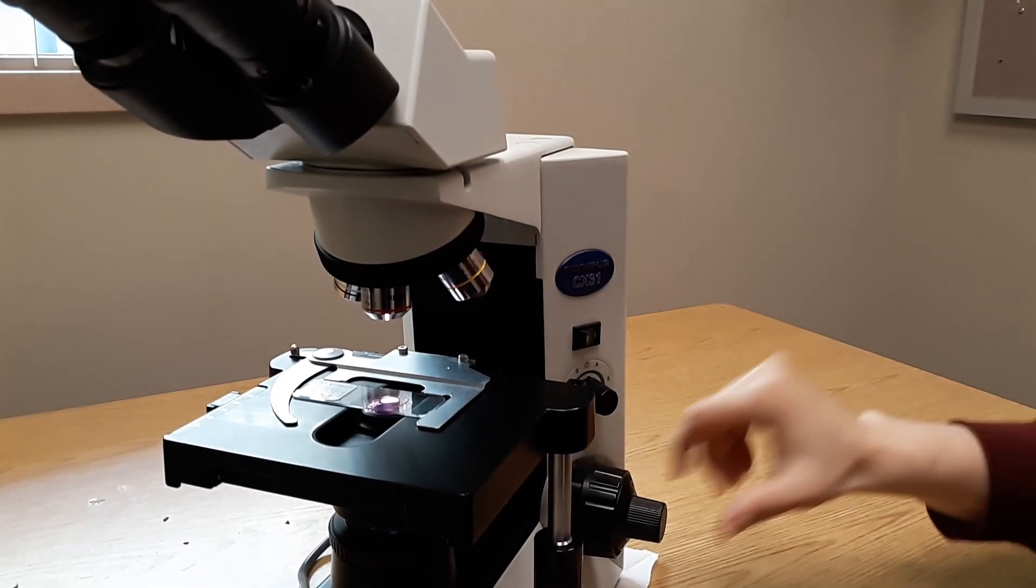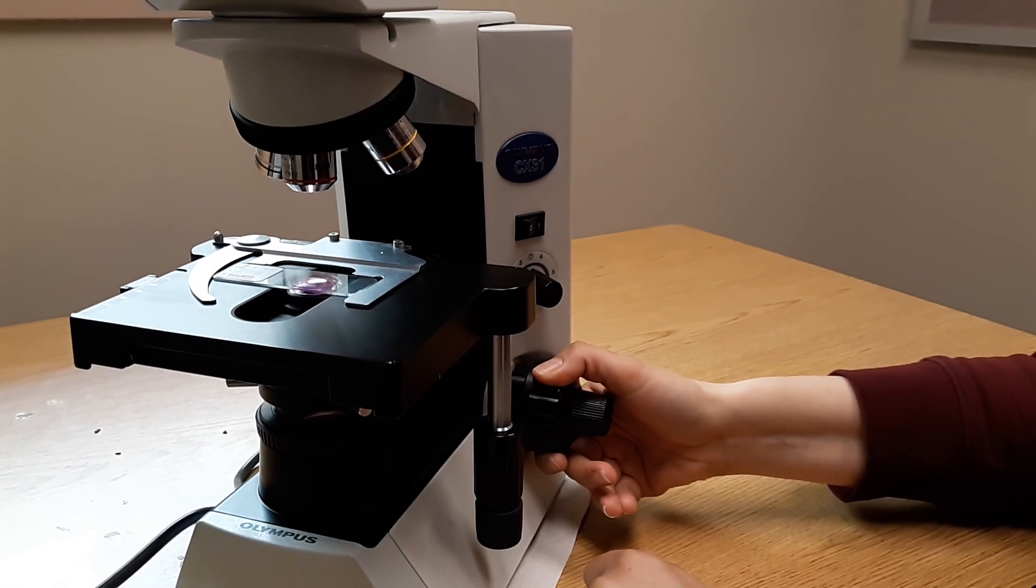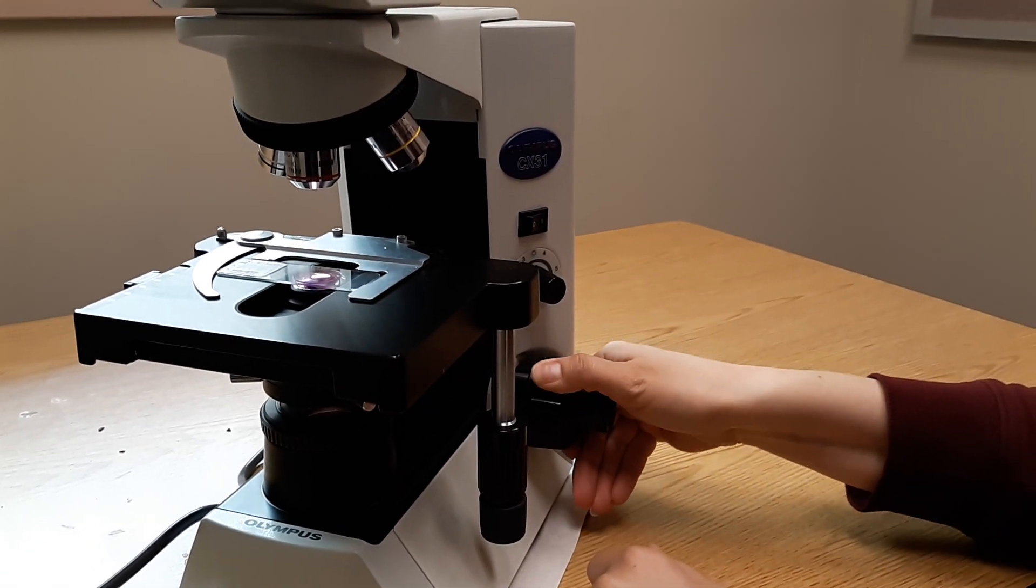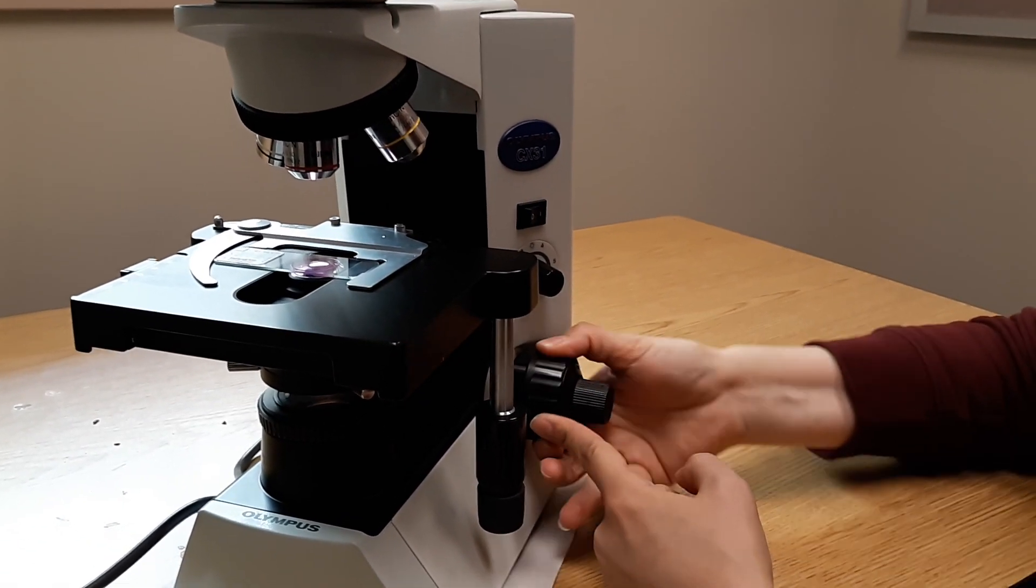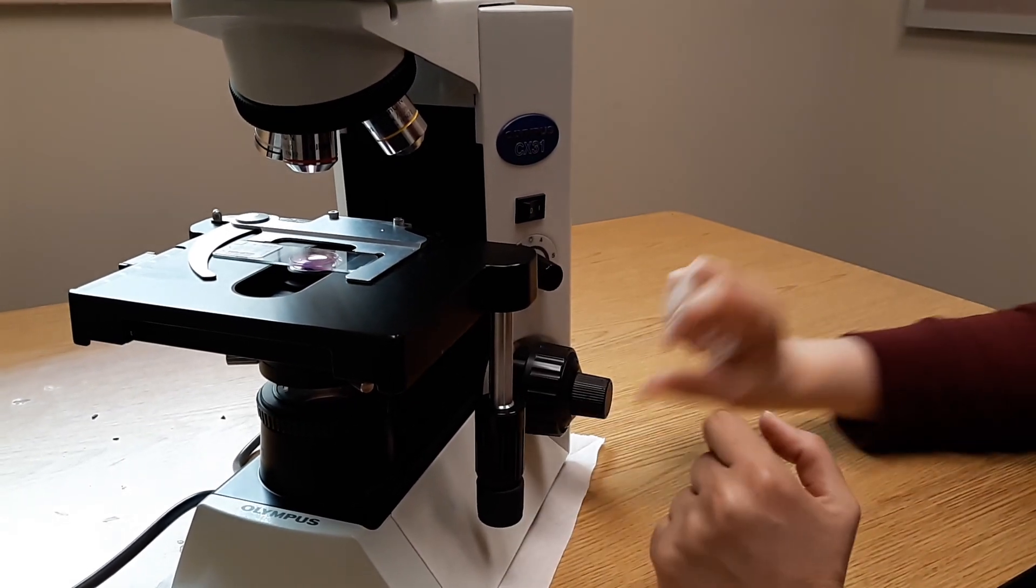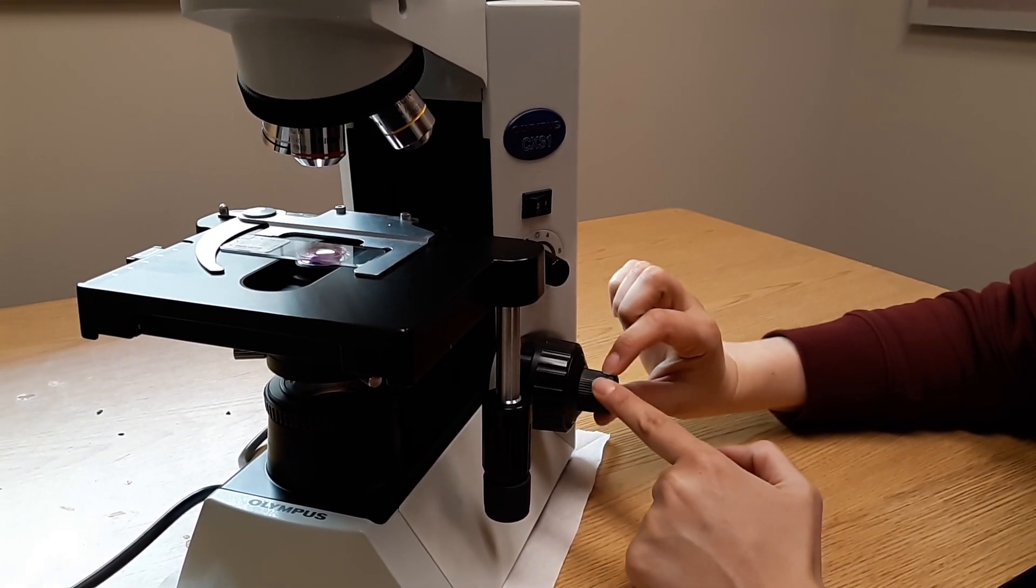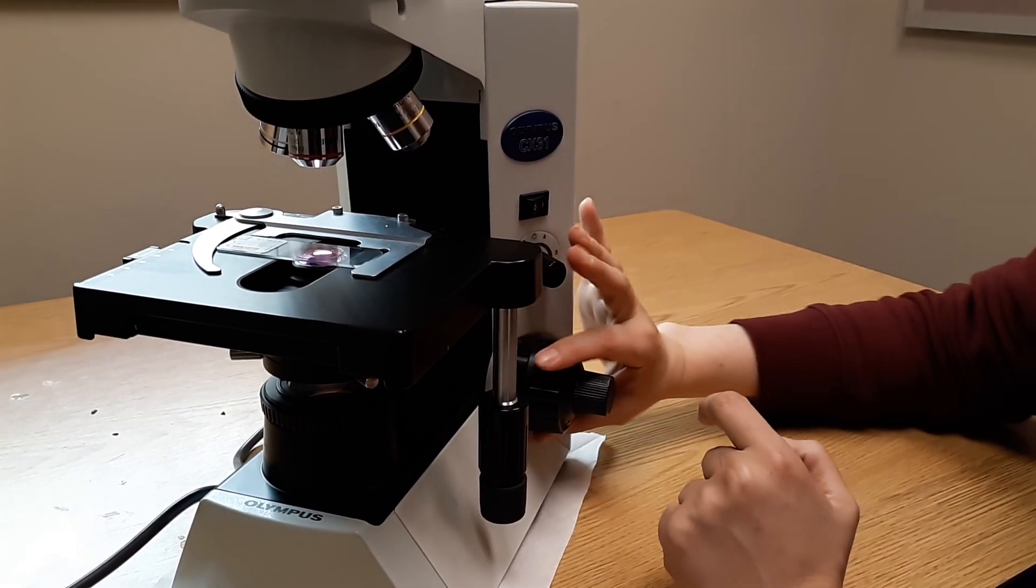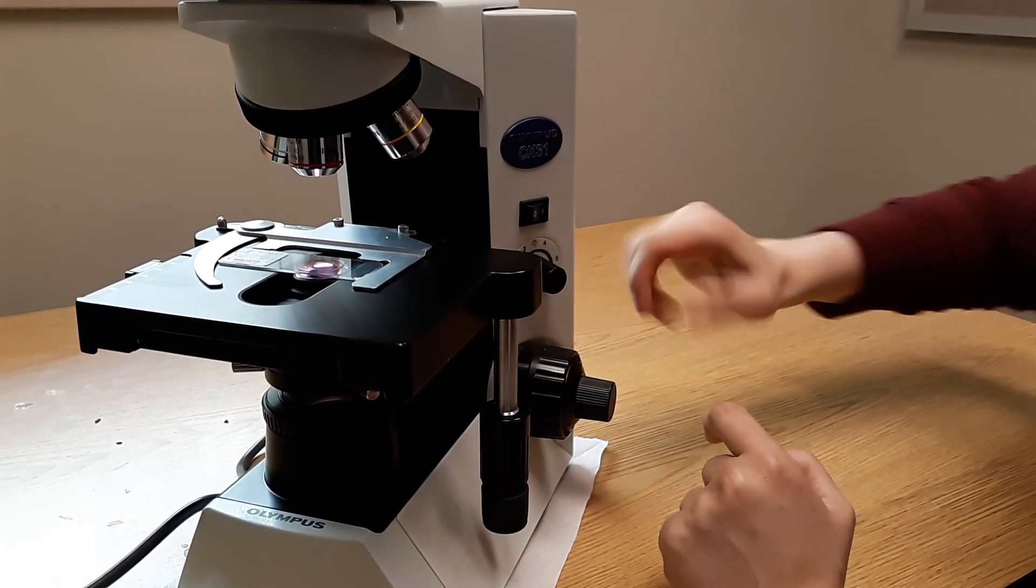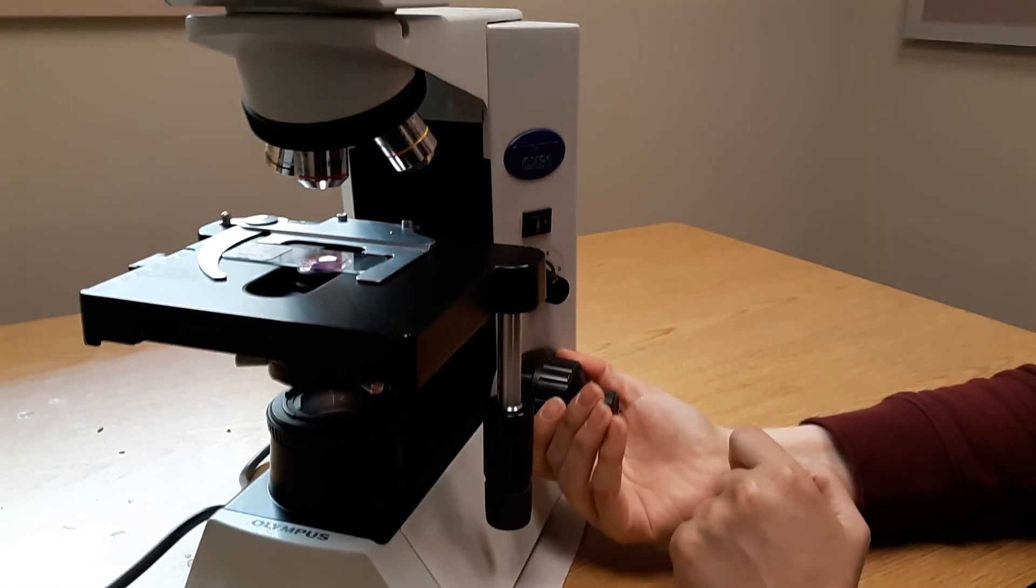There's a couple of methods, but the one we'll teach you is you can rotate up. This is the coarse focus, which moves quite a great deal of distance, and this is the fine focus. The fine focus takes the blur out, while the coarse focus allows you to get the specimen initially into focus.